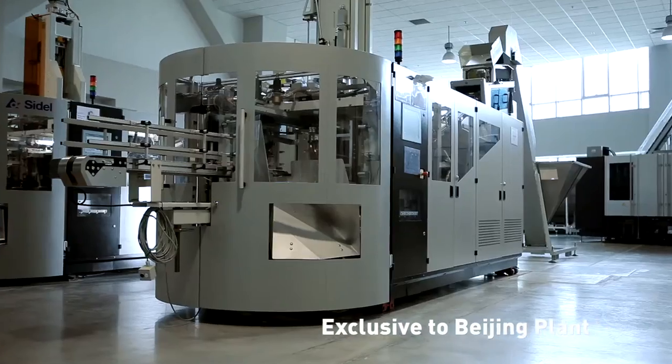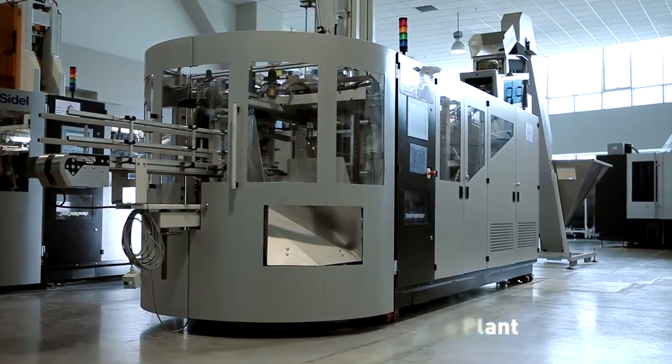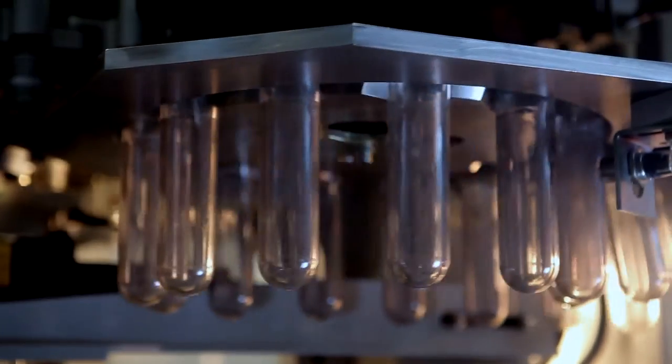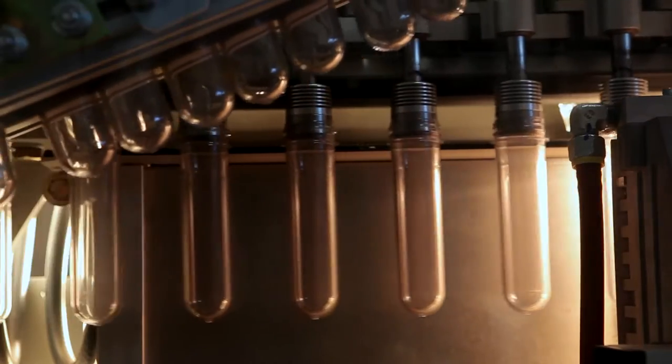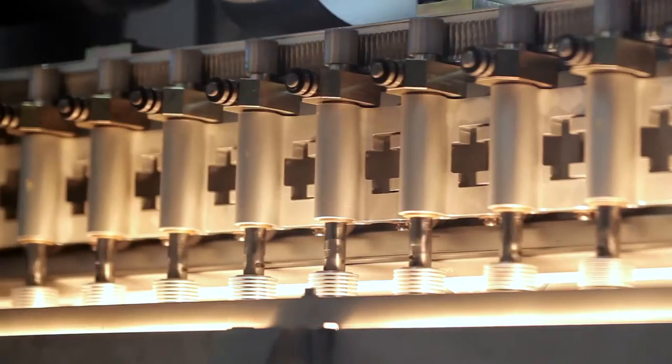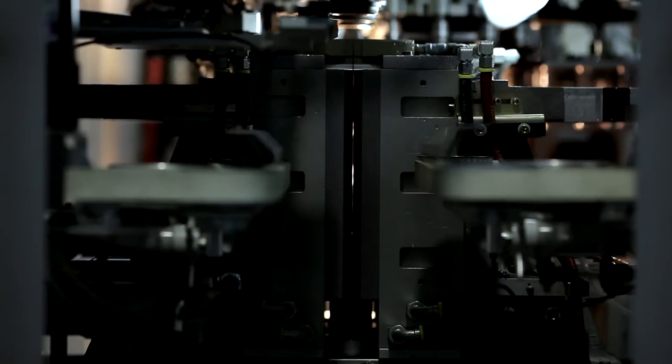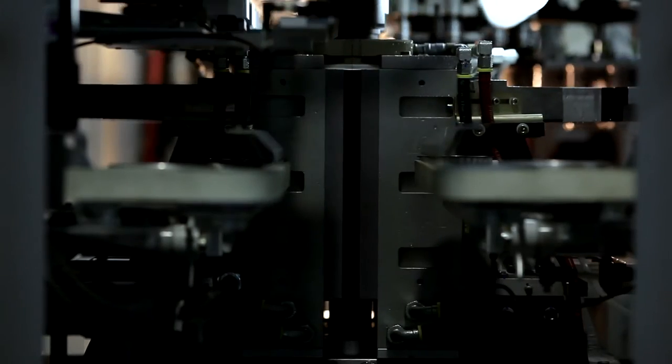Exclusive to the Beijing plant is the SBO Compact Linear Blow Molder, designed for PET bottle production of up to 7,000 bottles per hour. A specially designed low-to-mid output solution which has already proven its success in several markets.